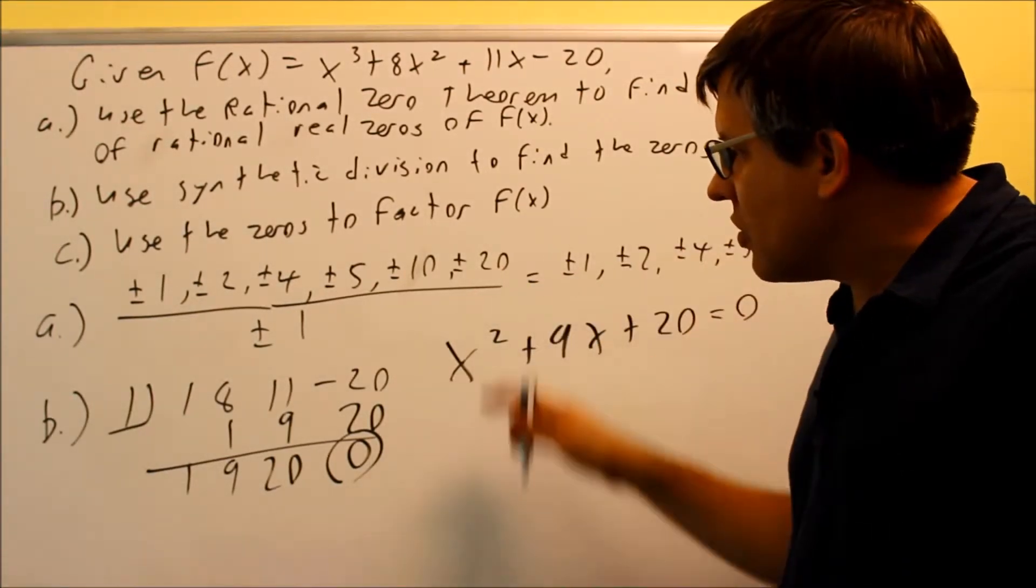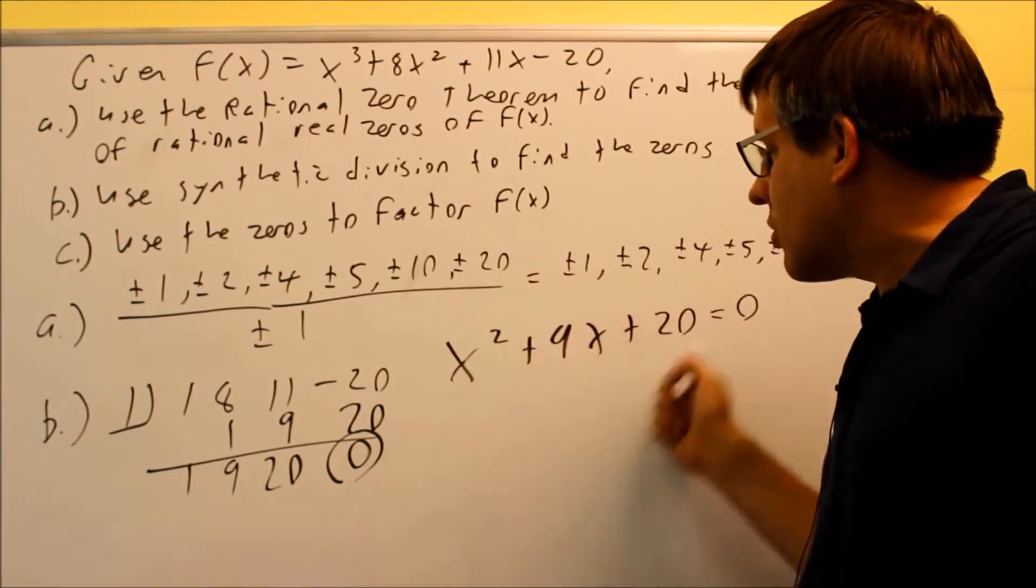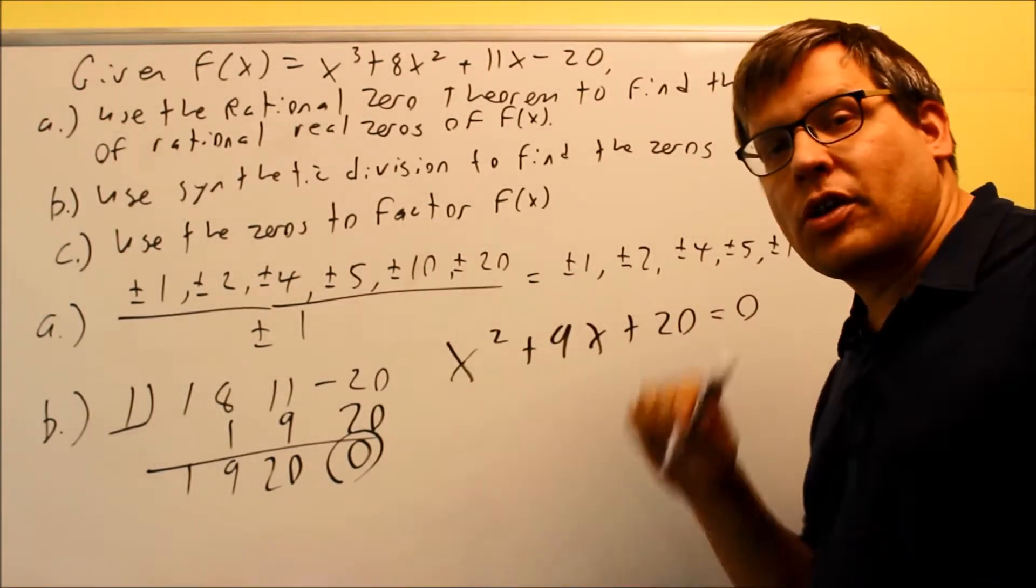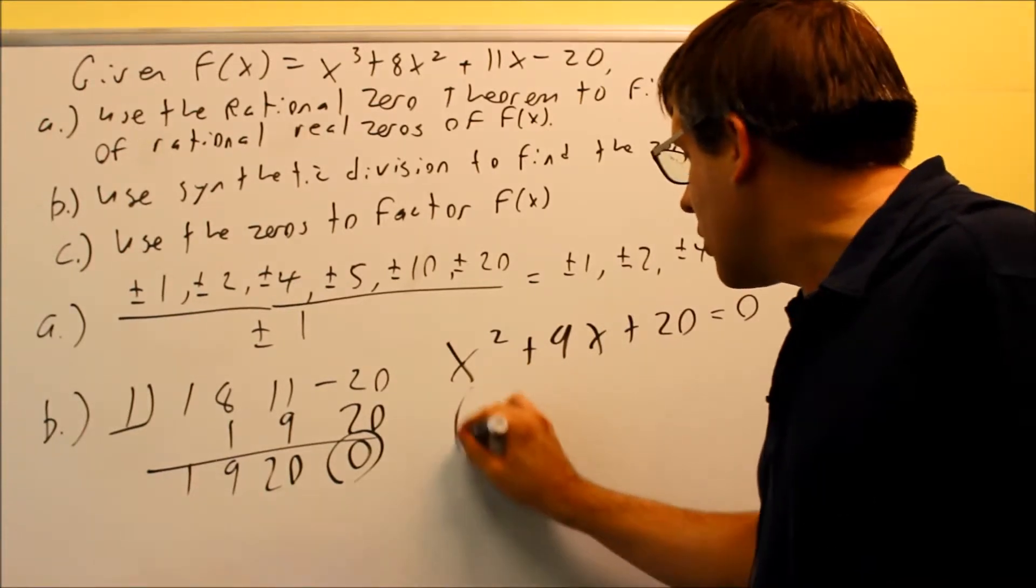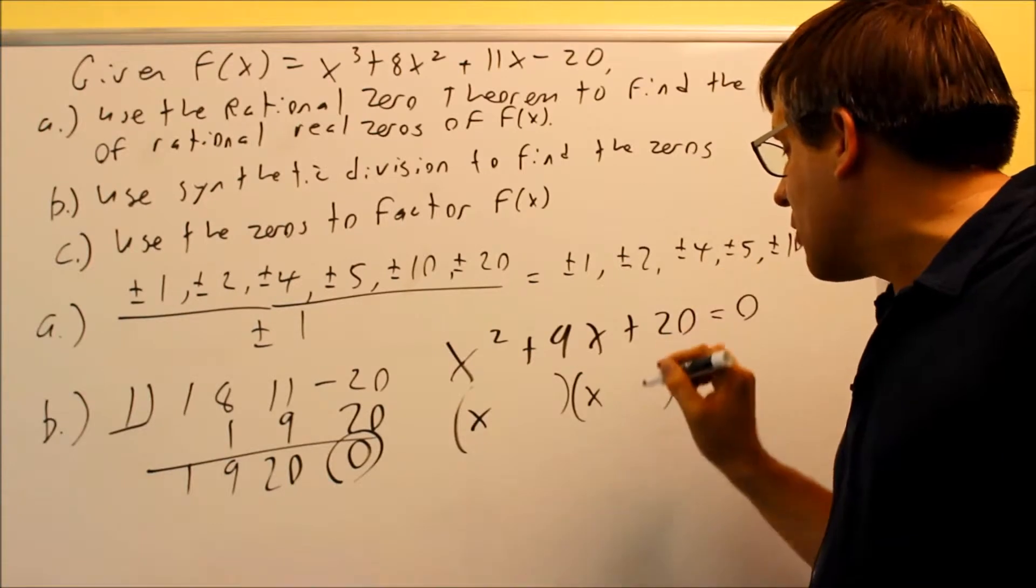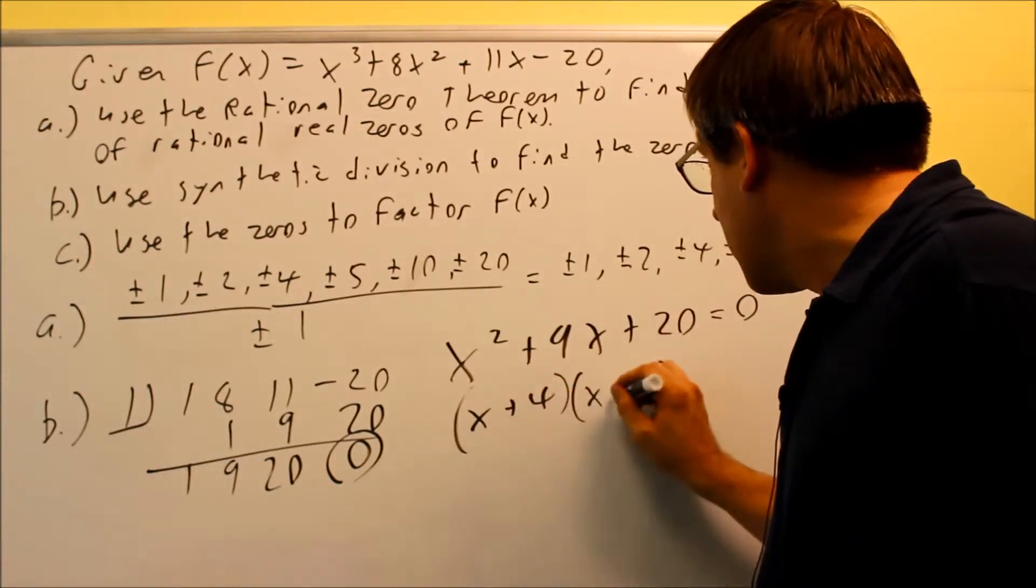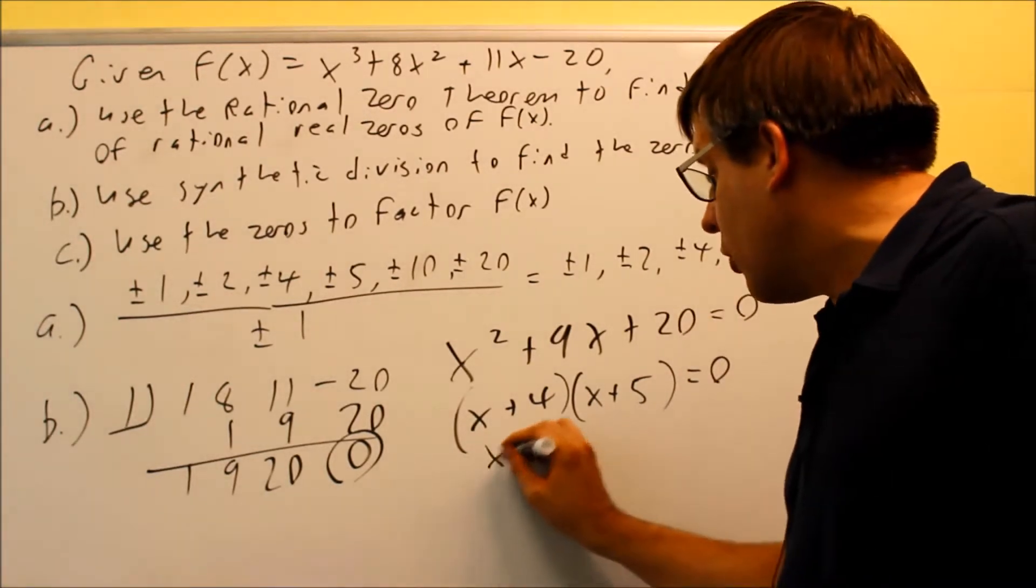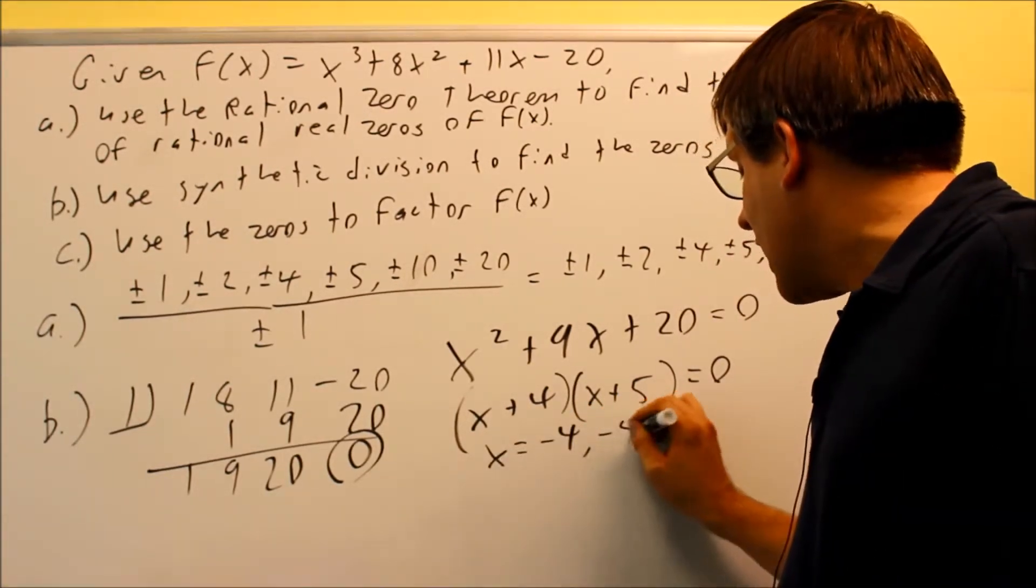Whatever is left once you do synthetic division the first time, your answer with the quadratic, we're going to take that one and we're going to factor that one now and we'll be able to get our answers. So factoring this one we get x and x, numbers that multiply to make twenty add to be nine would be four and five. We're going to set that equal to zero and we're going to get negative four and negative five.